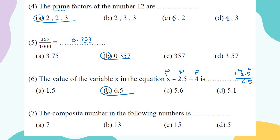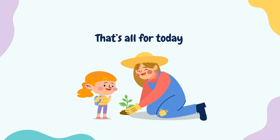Which is the composite number? We know the prime numbers: 2, 3, 5, 7, 11, 13, 17, 19, 23, 29. So 15 is composite because it's divisible by 3, by 5, and by itself and 1. That's all for today, see you soon inshallah.